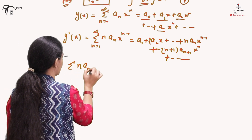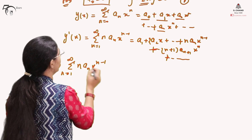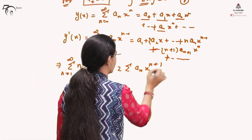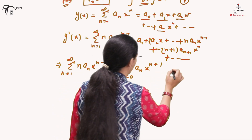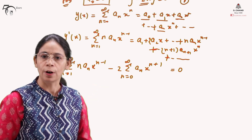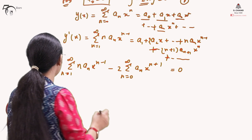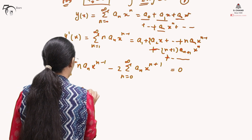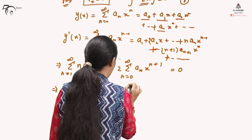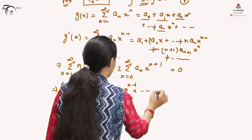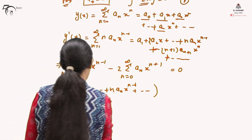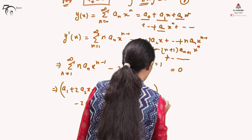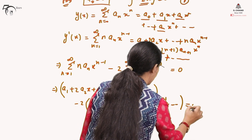We will substitute the expressions for y and y' into the differential equation. It becomes sigma (n from 1 to infinity) of n·a_n·x^(n-1) minus 2x times sigma (n from 0 to infinity) of a_n·x^n = 0. We must be extra cautious about the index for n — whether it starts from 1 or from 0. In expanded form: a_1 + 2a_2·x + n·a_n·x^(n-1) + ... minus 2(a_0·x + a_1·x² + ...) = 0.